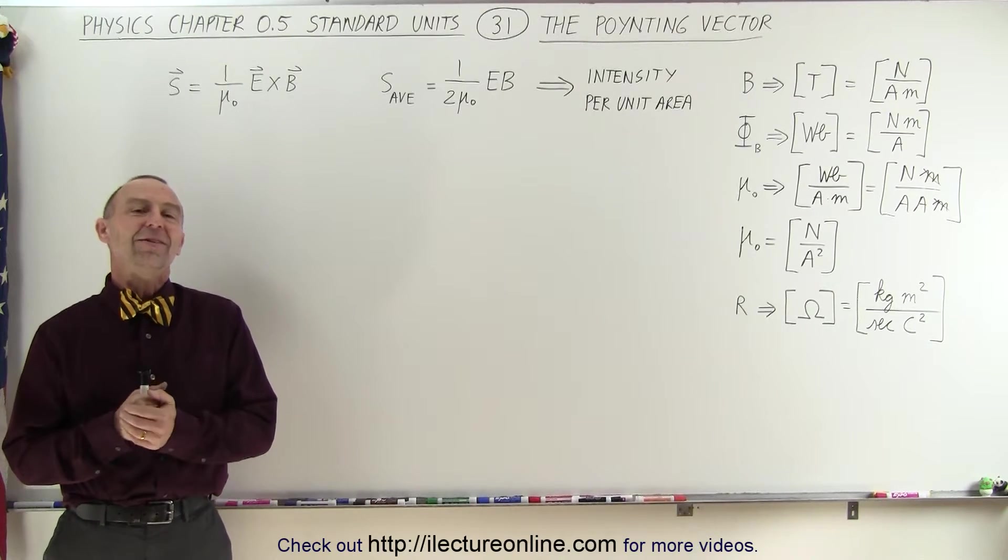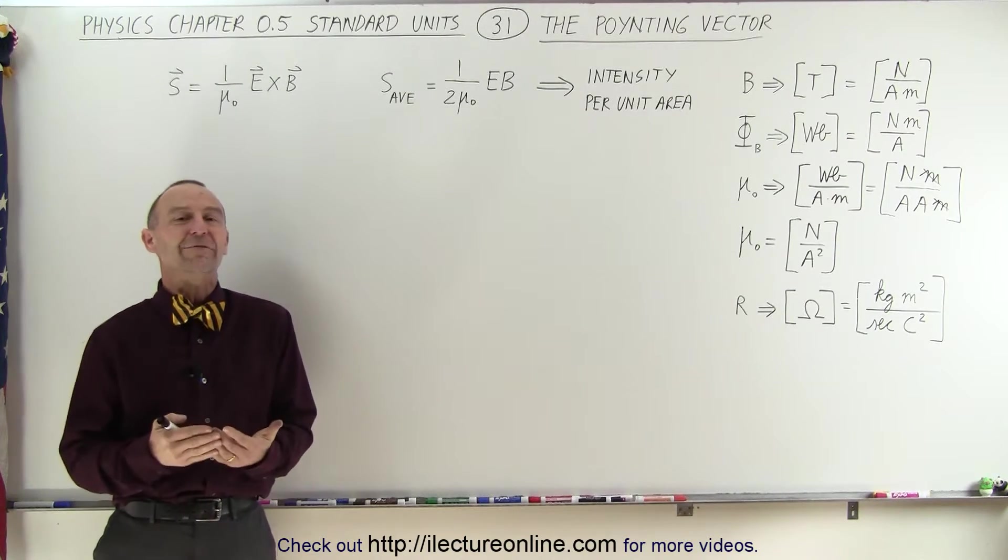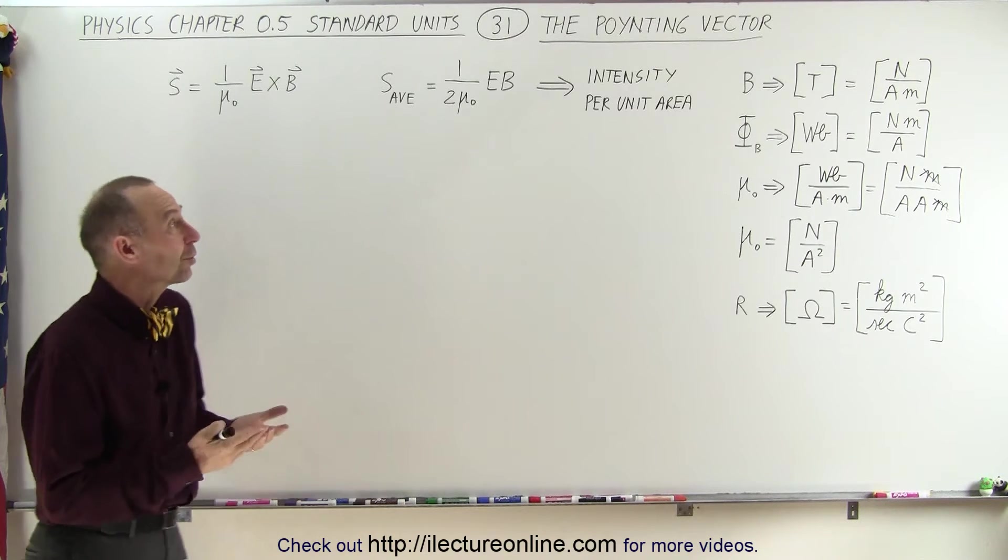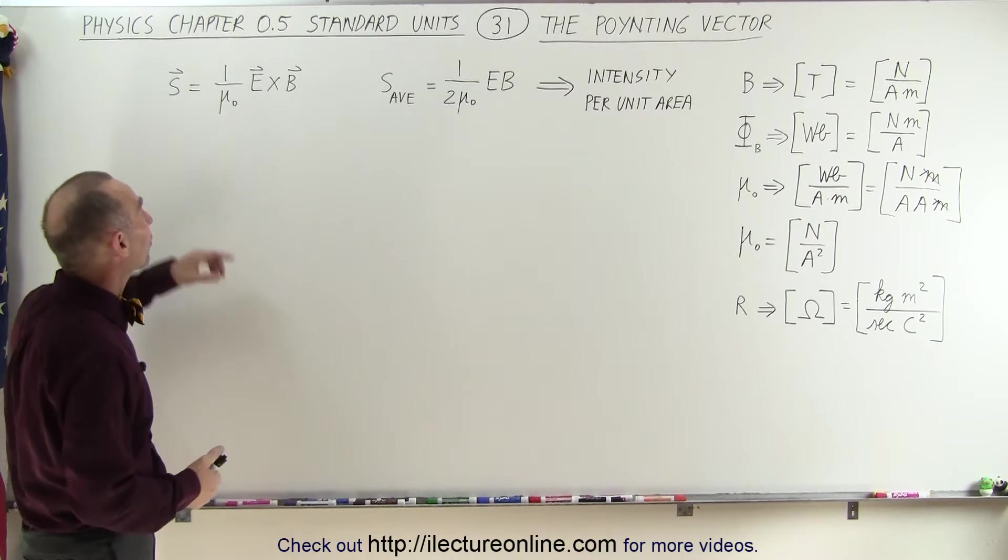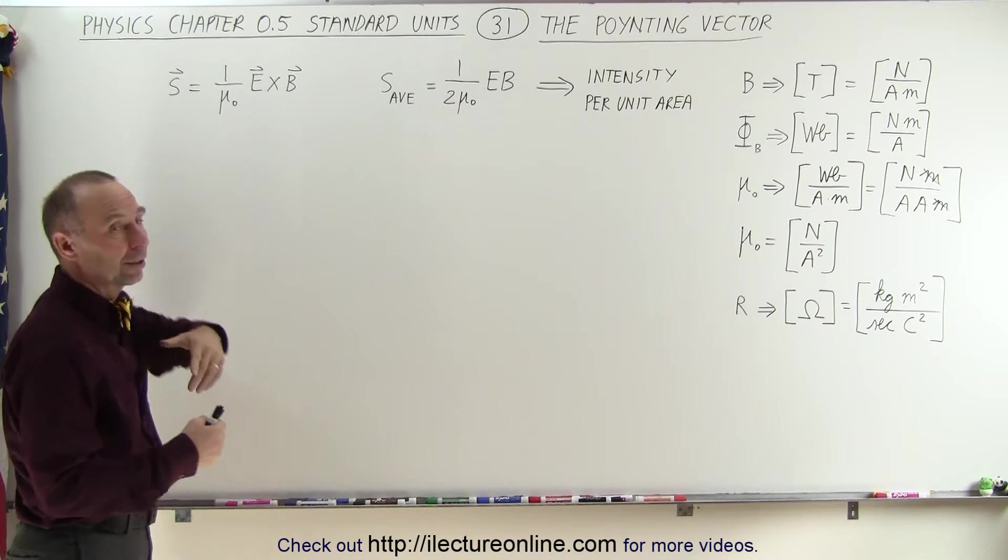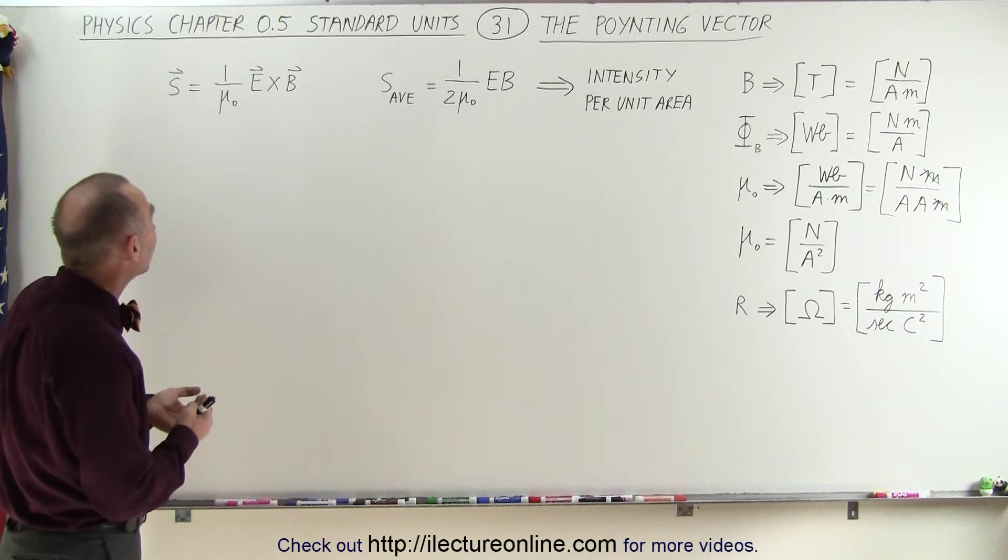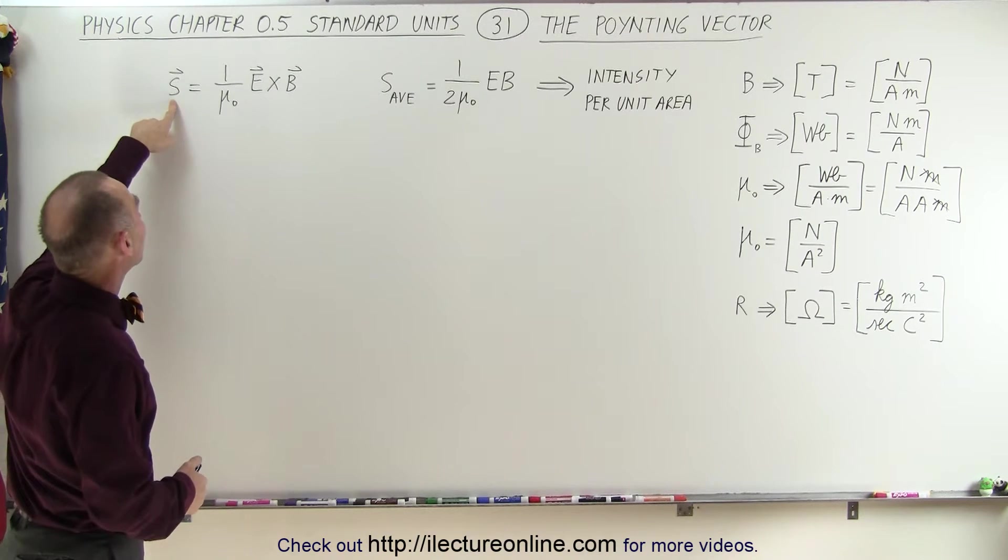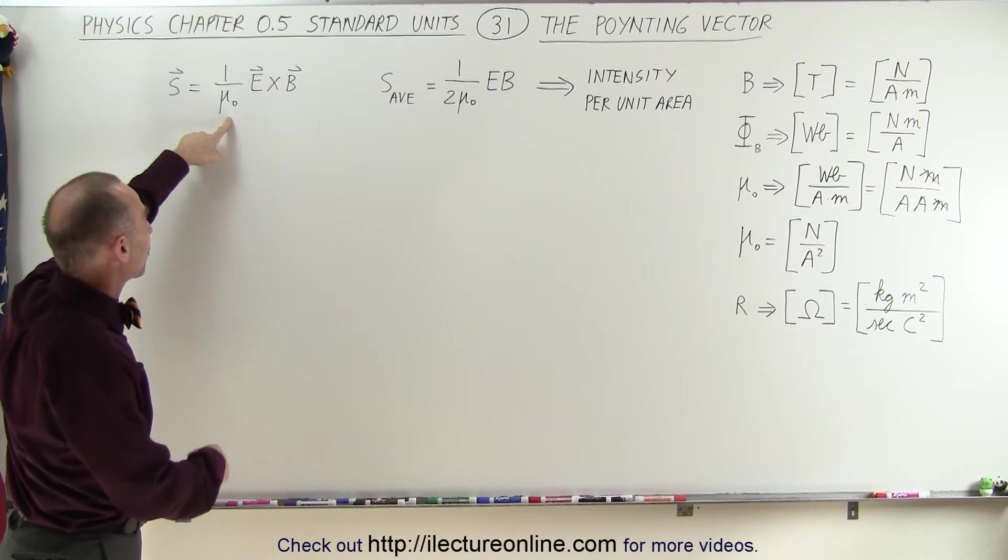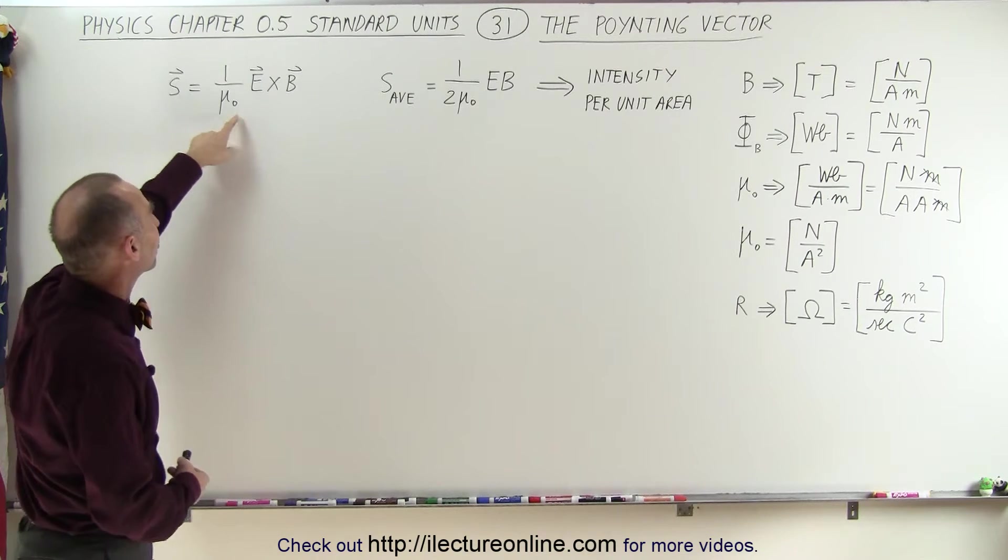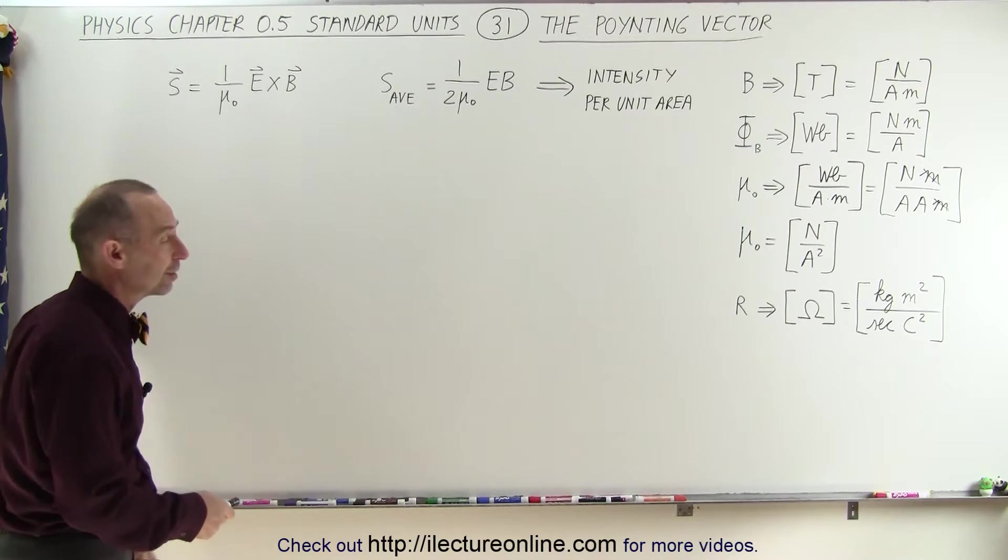Welcome to our Lecture Online. Now let's take a look at the units of the pointing vector. The pointing vector is a vector that describes how electromagnetic radiation moves through space. It can be defined as 1 over mu sub nought, which is the permeability of free space, times the cross product between the electric field and the magnetic field.